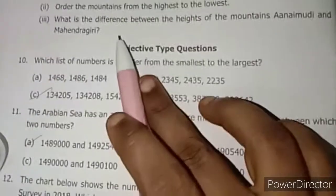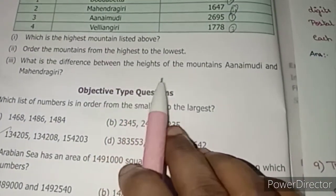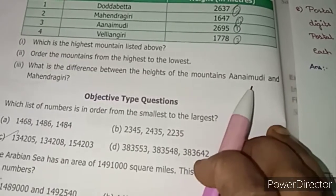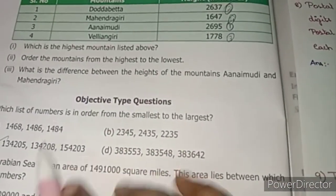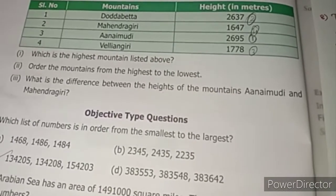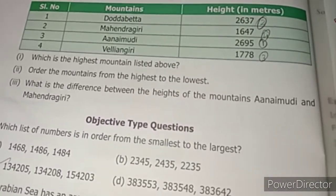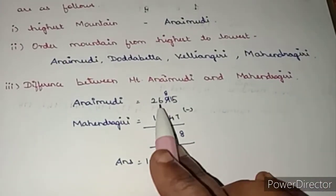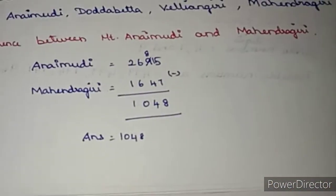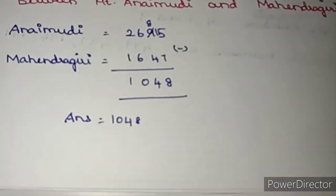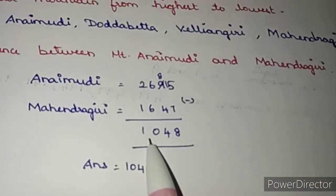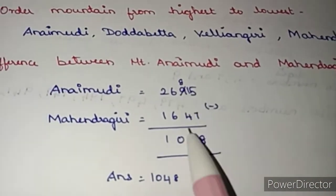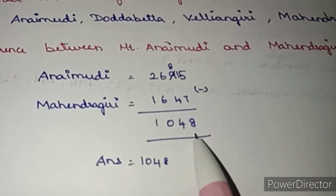What is the difference between the heights of Anayimudi and Mahendragiri — the highest and the lowest? Anayimudi is 2,695 and Mahendragiri is 1,647. We subtract: 2,695 minus 1,647 equals 1,048. The difference in height is 1,048 meters.